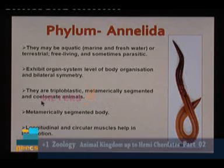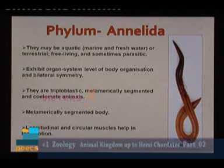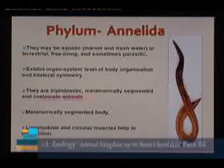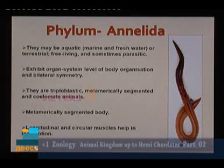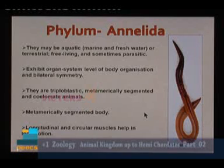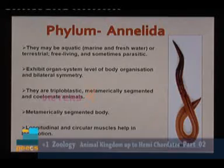True coelom appears from phylum Annelida onwards — from this phylum up to Chordata we can see a true body cavity. They have longitudinal as well as circular muscles for locomotion, as seen in the earthworm. Apart from these muscles, aquatic forms also have parapodia and earthworms have setae, both of which help in locomotion.